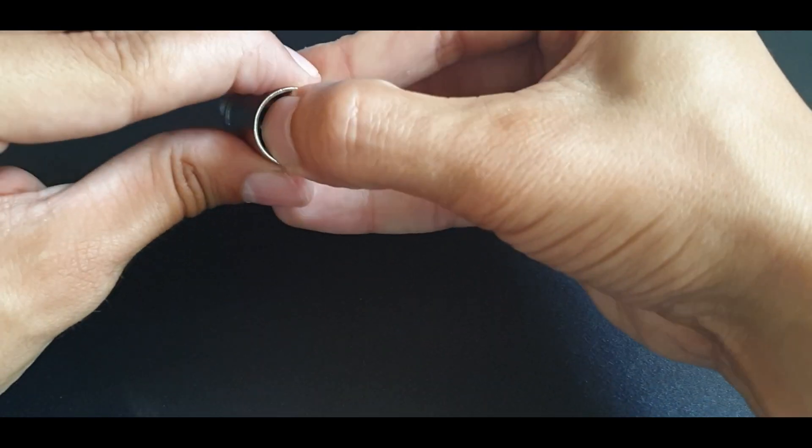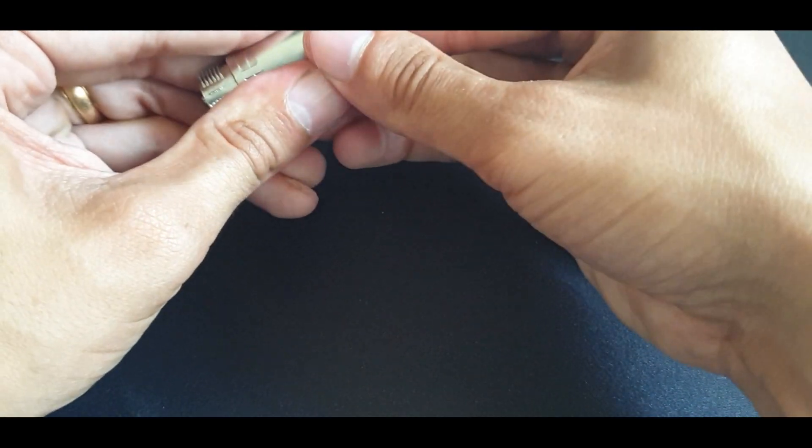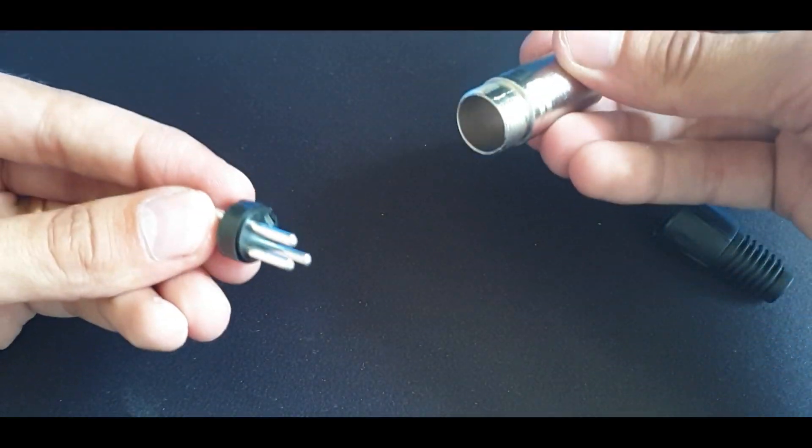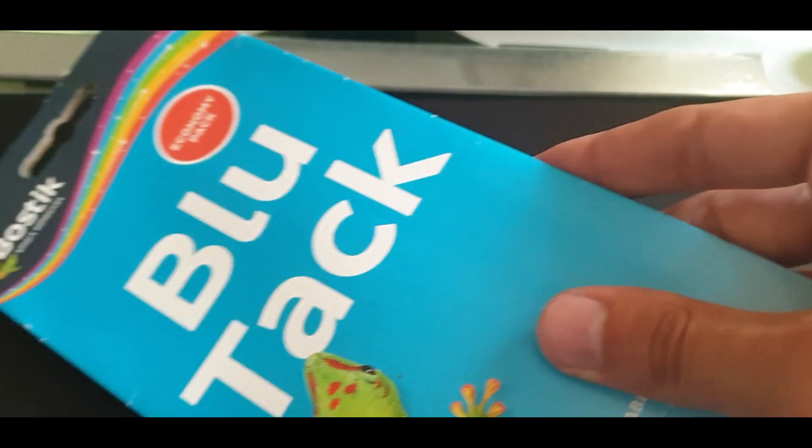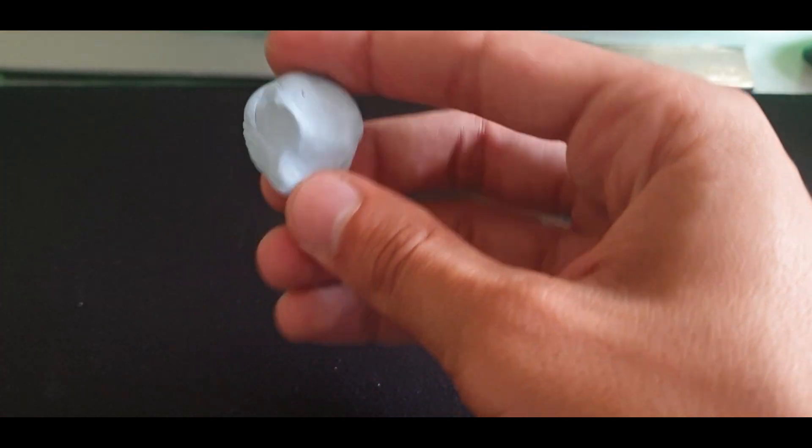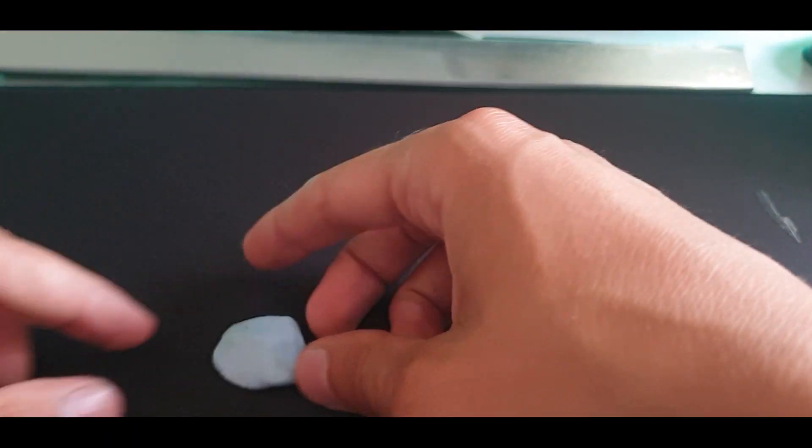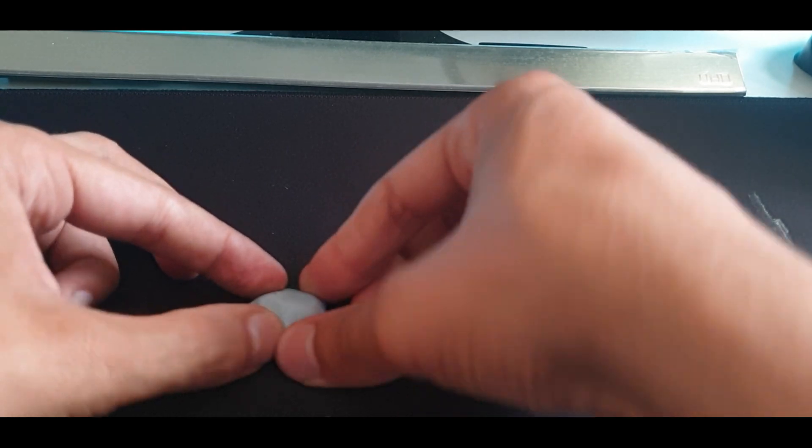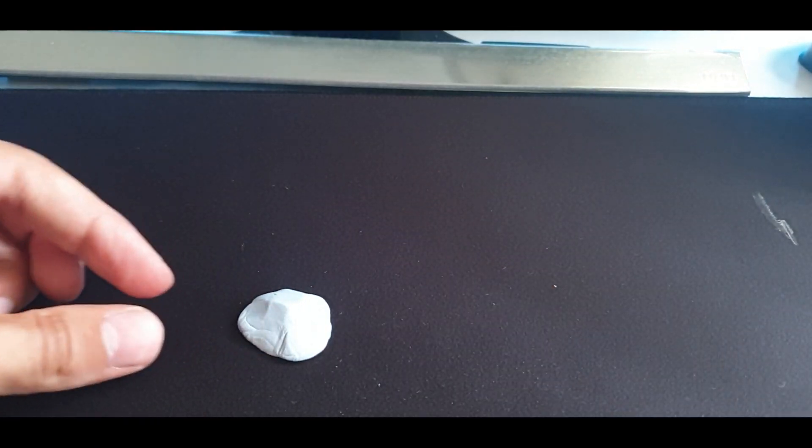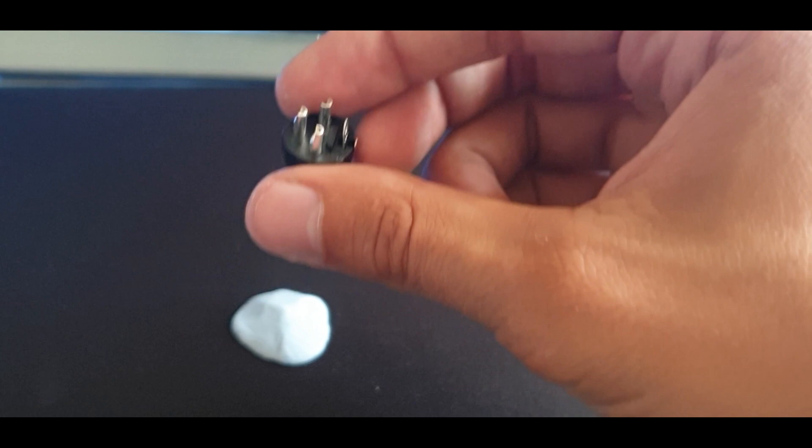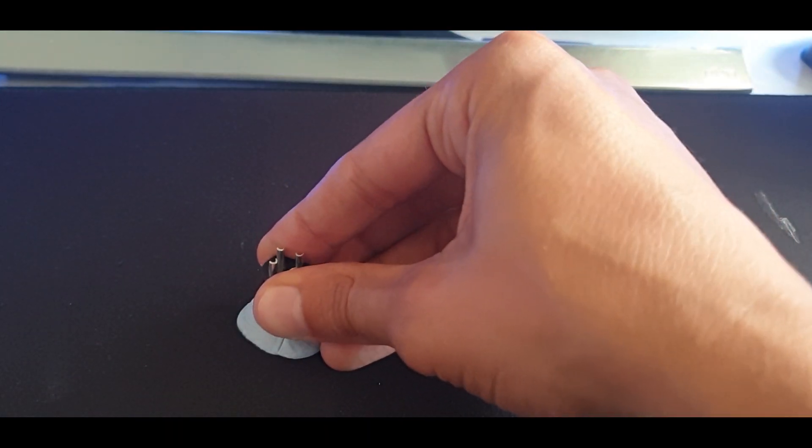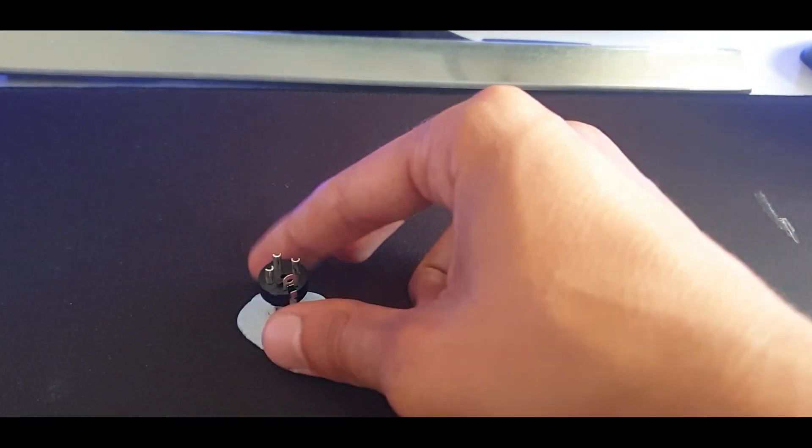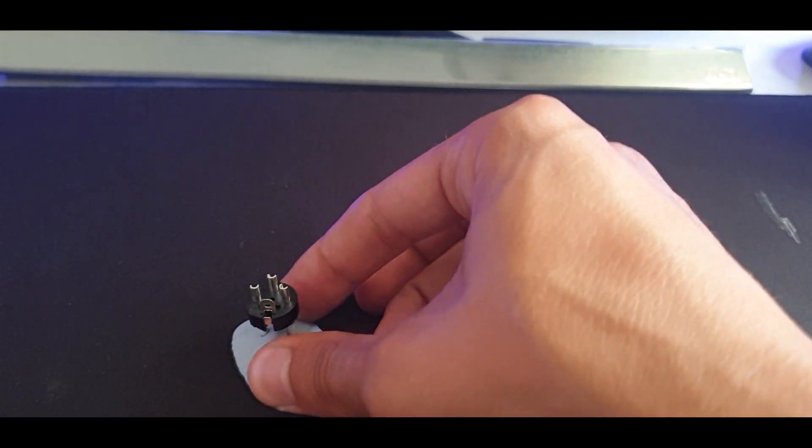Okay, and this is where you will need your trusty blue tack. You just need enough to make a little base like so. Then you're gonna get your pins from the XLR plug and stick them firmly into the blue tack. This will prevent the XLR pins from falling over when you start the soldering process.